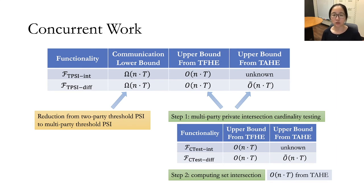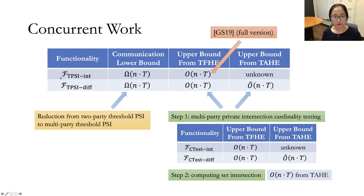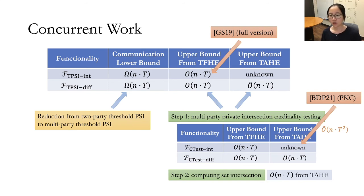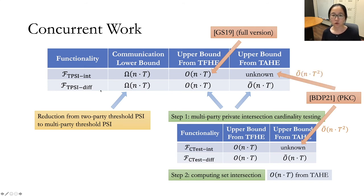I want to mention two concurrent works. The first is the full version of GS19, where they extend two-party threshold PSI to the multi-party case and consider the first functionality TPSI-int. The second concurrent work is by Branko, Dautlin, and Poo, published at PKC this year. They consider the cardinality testing for ctestint and construct a protocol with communication complexity roughly n times t squared from TAHE. By combining this with the second step, they achieve a protocol for TPSI-int with the same communication complexity from TAHE. So they complement our work.